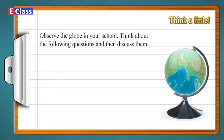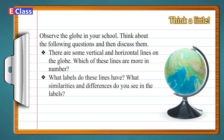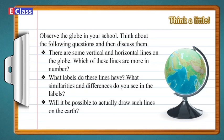Think a little. Observe the globe in your school and think about the following questions, then discuss them. There are some vertical and horizontal lines on the globe. Which of these lines are more in number? What labels do these lines have? What similarities and differences do you see in the labels? Will it be possible to actually draw such lines on the earth?